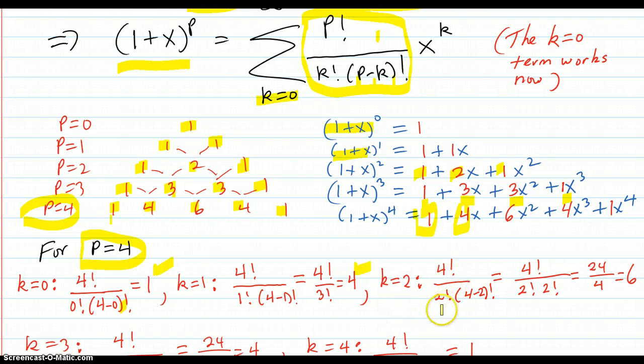k equals 2, 4 factorial over k factorial, which is 2, p minus k factorial is 4 minus 2 factorial, that's 2 factorial times 2 factorial, that's 2 times 2 is 4, 24 over 4 is 6, there's your 6.